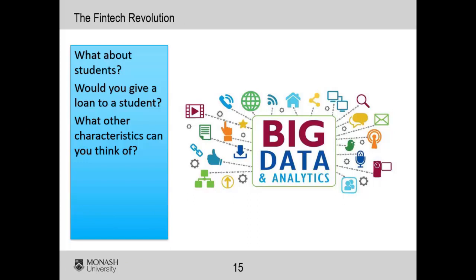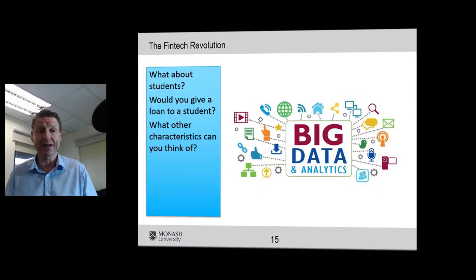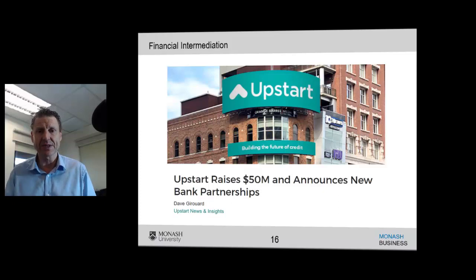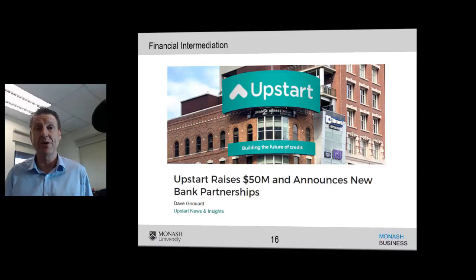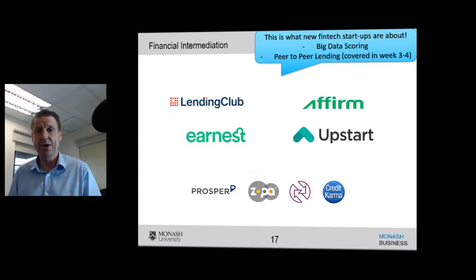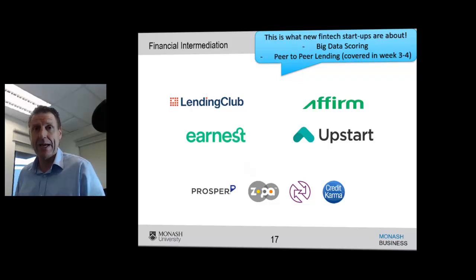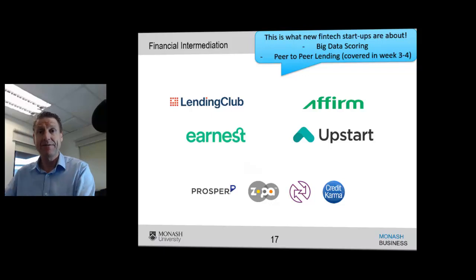In this first of six sections — would you give a loan to a student? What other characteristics could you think of? Maybe where they live. Consider what Upstart does — they raised $50 million and announced new bank partnerships, focusing on a better scoring model by partnering with banks to help their loan decision making. Lending Club, Earnest, Upstart, and Prosper have all gotten into the lending space, telling people to come get a loan from them — and in doing so, building a database just like Capital One did over the last two decades.